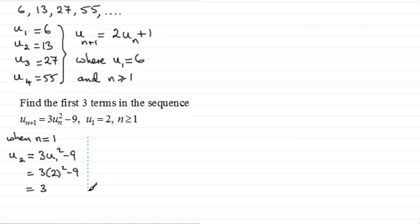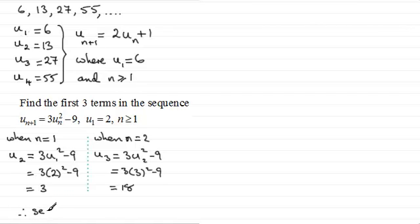And to get the third term in the sequence, I now have to just set n equal to 2. So when n equals 2, we end up with U2 add 1, the third term, U3, is equal to 3 times Un, n is now 2, so it's 3 times U2 squared, and then minus 9. We know what U2 is, the second term, we just worked it out, it was 3. So it's 3 times 3 squared minus 9. And what we have here is 18.